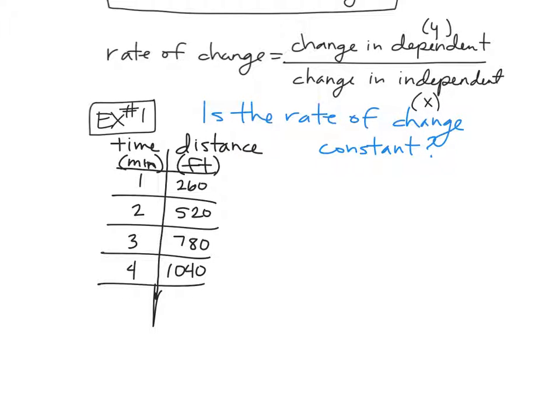In order for it to be constant, it means it has to be changing at the same rate the whole way through. So in order for the rate of change to be constant, we said the change in our y value over the change in our x value has to remain throughout.